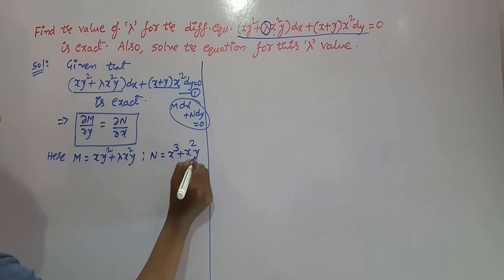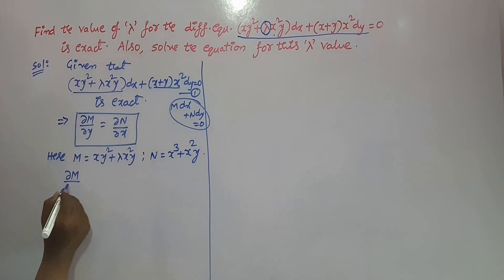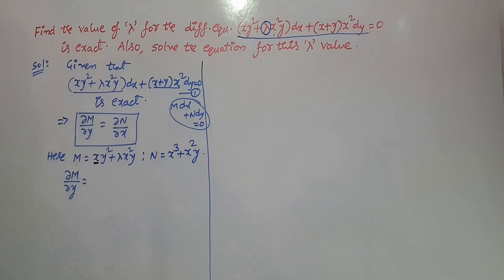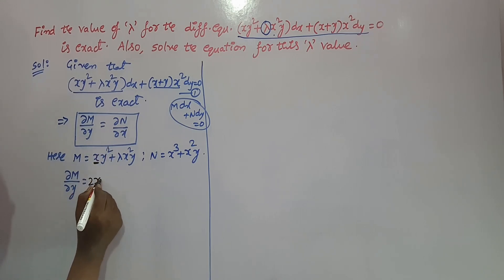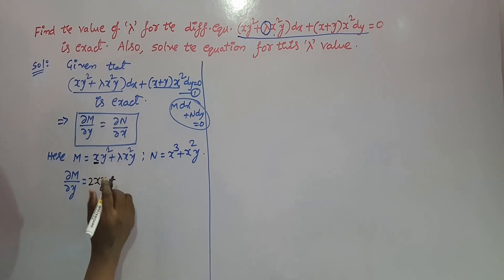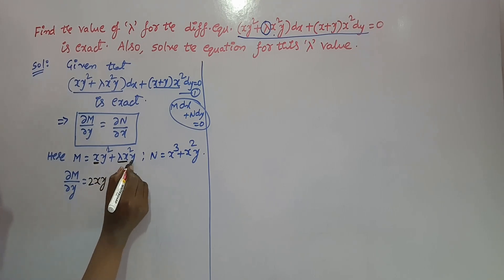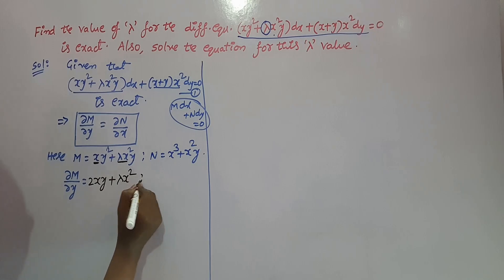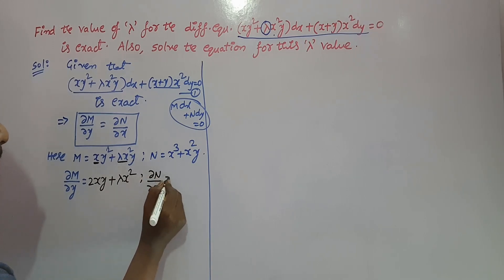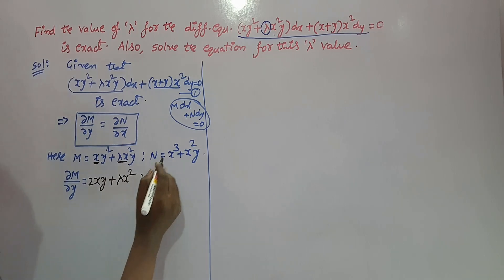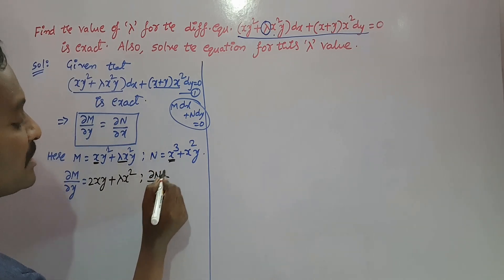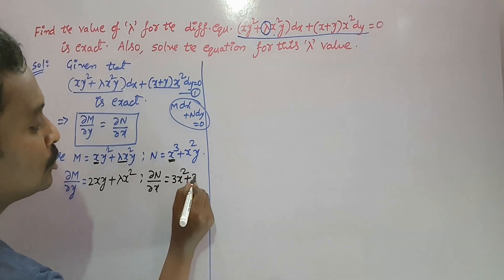Now compute ∂M/∂y — partial differentiation of M with respect to y. Here x is treated as constant. The derivative of y squared is 2y, so we get 2xy. Lambda x squared is a constant, and the derivative of y with respect to y is 1, giving lambda x squared. So ∂M/∂y equals 2xy plus lambda x squared. Then ∂N/∂x equals 3x squared plus 2xy.